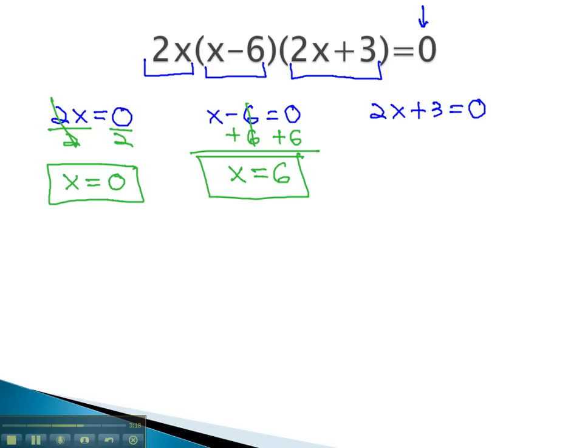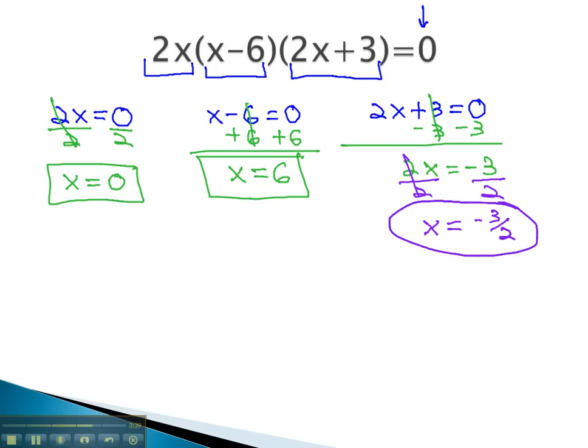To solve the third factor, we start by subtracting 3 to give us 2x equals negative 3. Finally, dividing by 2 gives us our final possible solution for x of negative 3 halves. When x is negative 3 halves, the last factor is 0, multiplied by the others, would always be 0.